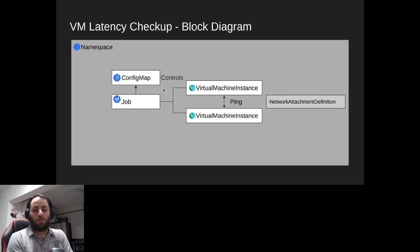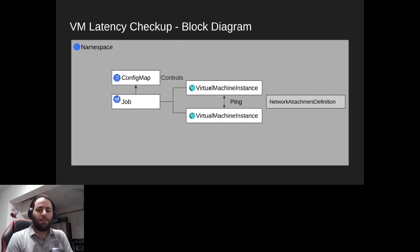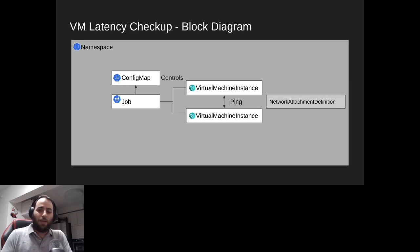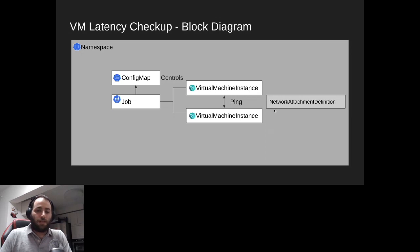The Job controls two virtual machine instances — it creates them, watches them, and deletes them at the end in order to not leave any traces behind. We also have a NetworkAttachmentDefinition — we don't need to understand it in detail, just that it is an existing object on our cluster that we want our checkup to interact with.